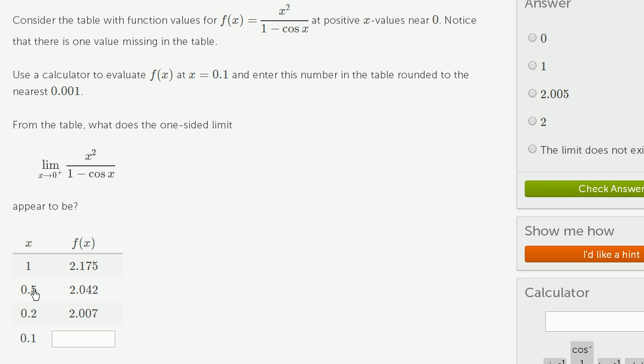When x gets even a little bit closer to 0, and once again we're approaching 0 from values larger than 0. That's what this little superscript positive tells us. We're at 0.5 and we're at 2.042.